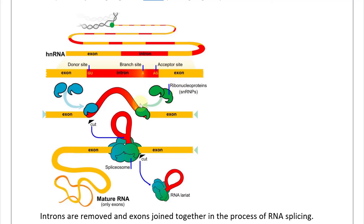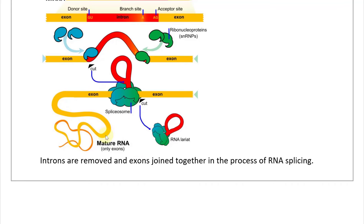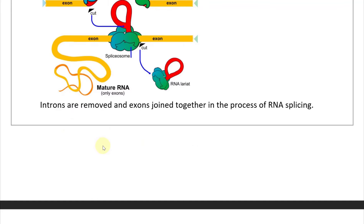The spliceosome removes the intron as an RNA lariat — a loop structure — and you are left with mature RNA consisting only of exons. Here is a simple illustration of exons and introns in pre-mRNA, showing the donor site GU at the 5' end and the acceptor site AG at the 3' end. There is also a pyrimidine tract — a region rich in pyrimidine nucleotides C and U — typically 15 to 20 base pairs long, located 5 to 40 base pairs before the 3' end of the intron to be spliced.